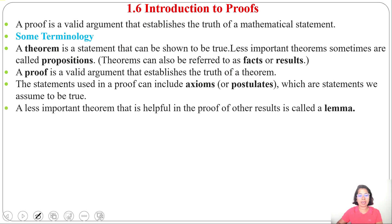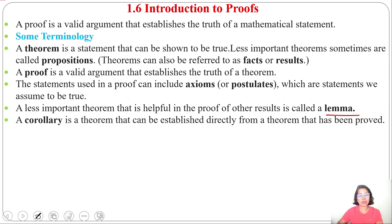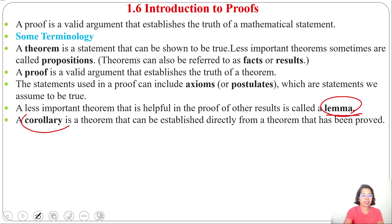Next is lemma. A less important theorem that is helpful in the proof is called a lemma. Lemma is derived from the theorem. Next is corollary. A corollary is a theorem that can be established directly from a theorem that has been proved. So lemma and corollary are both derived from the theorem.